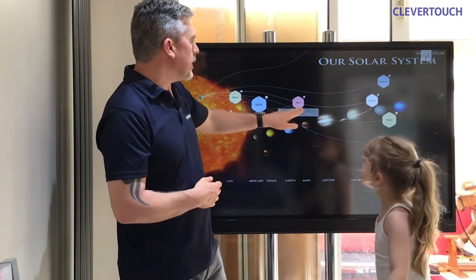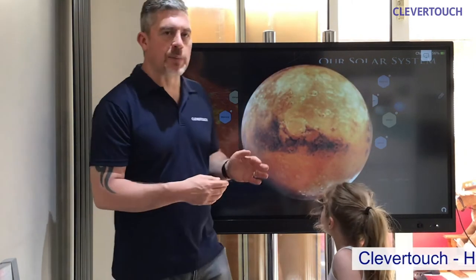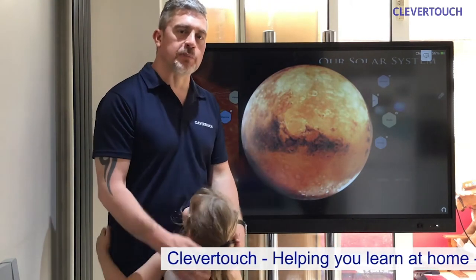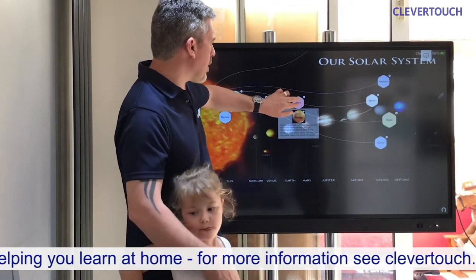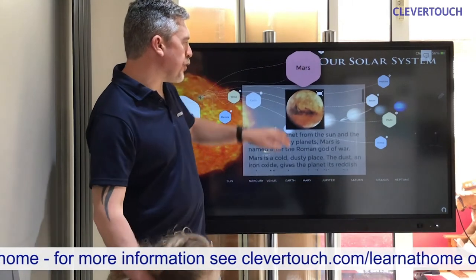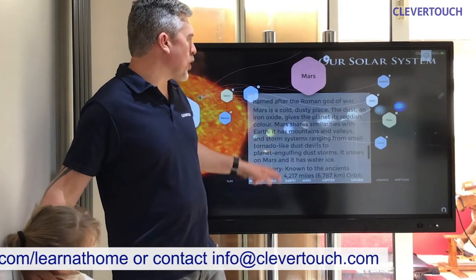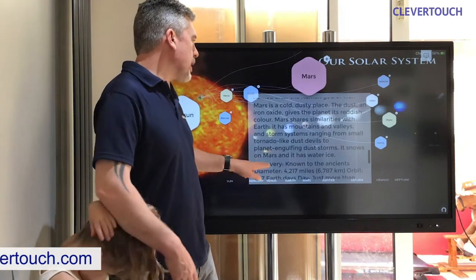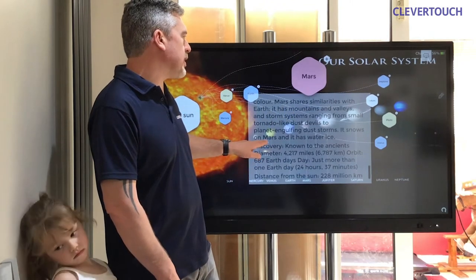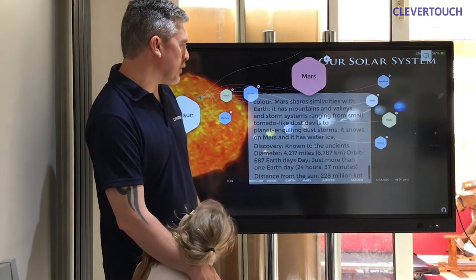The next planet out from Earth is Mars. Mars is another red-looking planet and it's the last of the rocky planets — Mercury, Venus, Earth, and Mars, the first closest planets to the sun, are all rocky planets. The fourth planet from the sun, Mars is named after the Roman god of war. Mars is a cold, dusty place — dust and iron oxide give the planet its reddish colour. Mars shares similarities with Earth; it has mountains, valleys, and storm systems ranging from small dust devils to planet-engulfing dust storms.